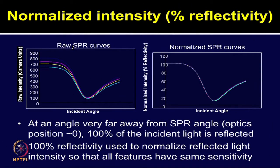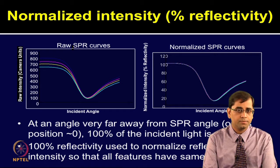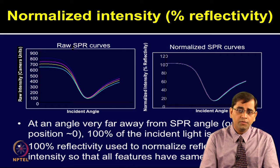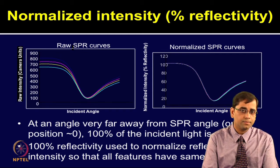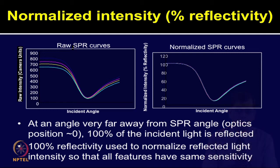The next important step is how to normalize intensity or percentage reflectivity. The left-hand side image shows a raw SPR curve, whereas the right-hand side image shows a normalized SPR curve. At an angle very far away from the SPR angle, with optics position around zero, 100 percent of the incident light is reflected. This 100 percent reflectivity can be used to normalize the reflected light intensity so that all features have uniform sensitivity.